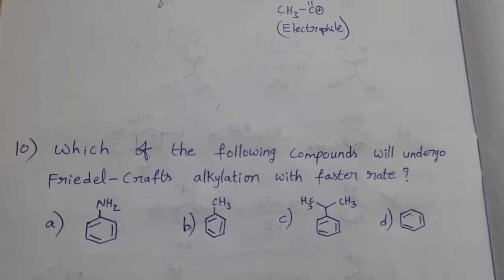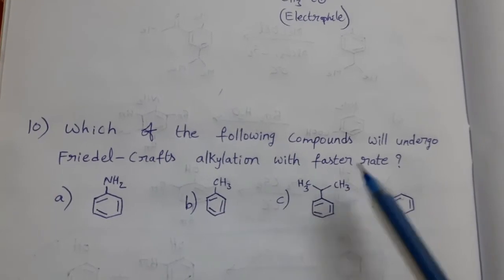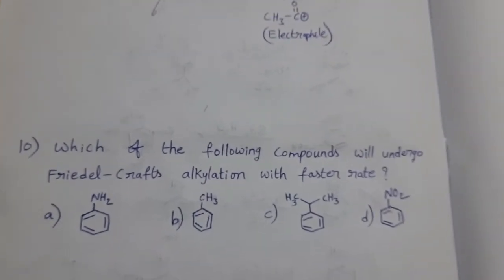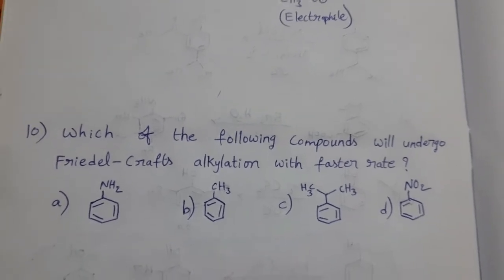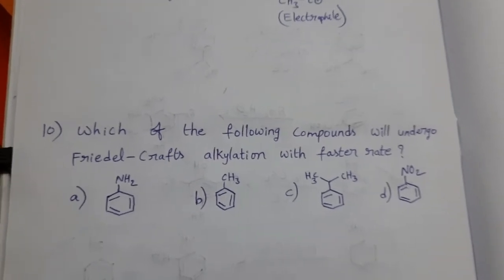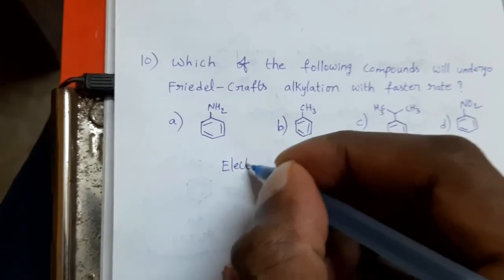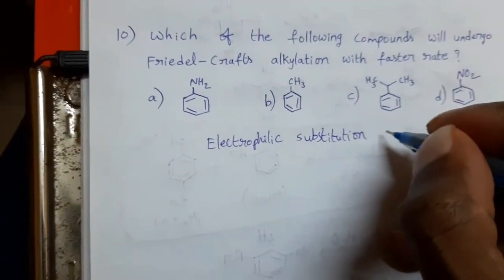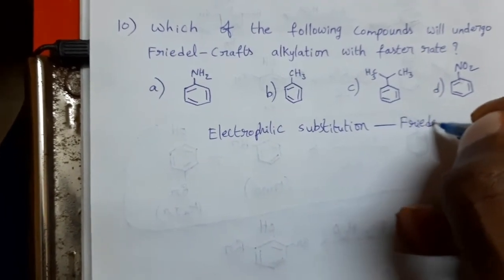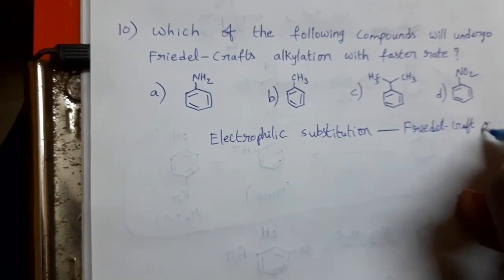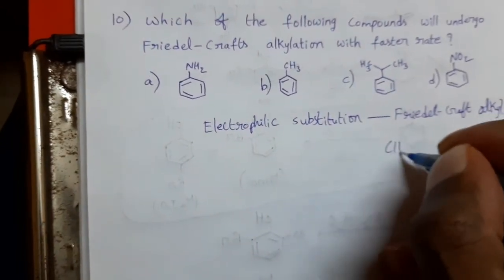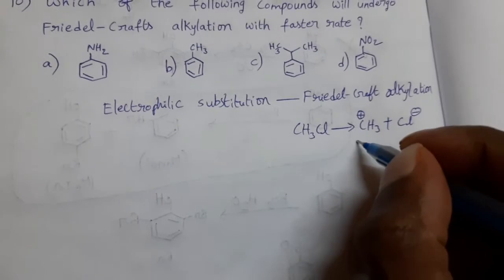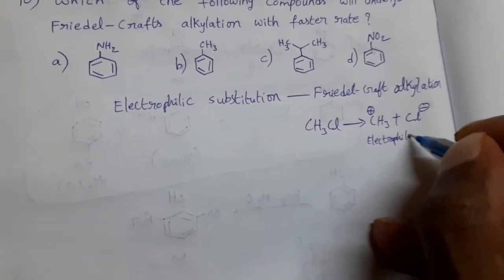Which of the following compounds will undergo Friedel-Craft alkylation with a faster rate? Generally, Friedel-Craft alkylation is an electrophilic substitution reaction, meaning a group having positive charge is substituted. If we take CH3Cl, the electrophile is CH3+. This electrophile is substituted, making it an electrophilic substitution reaction — here specifically Friedel-Craft alkylation.